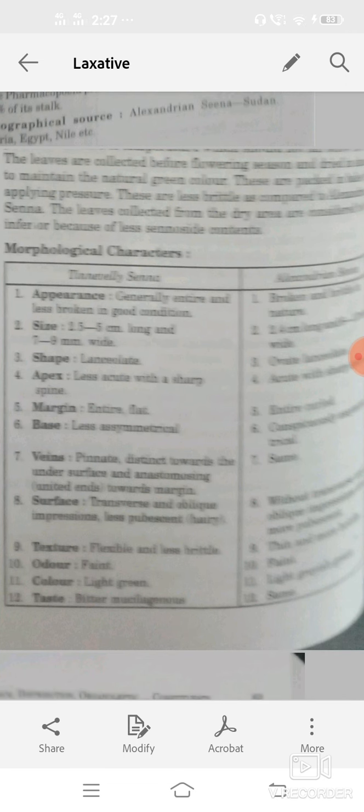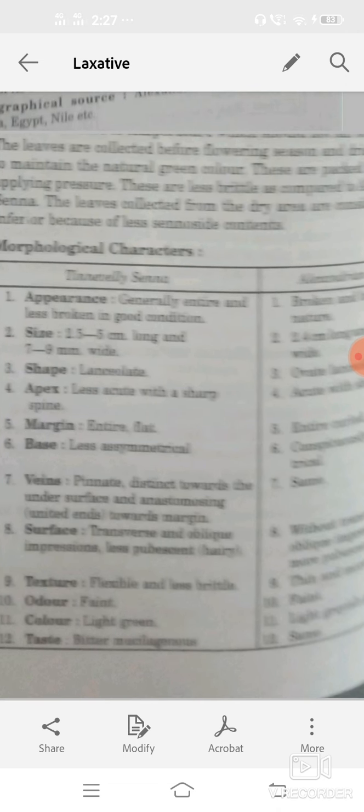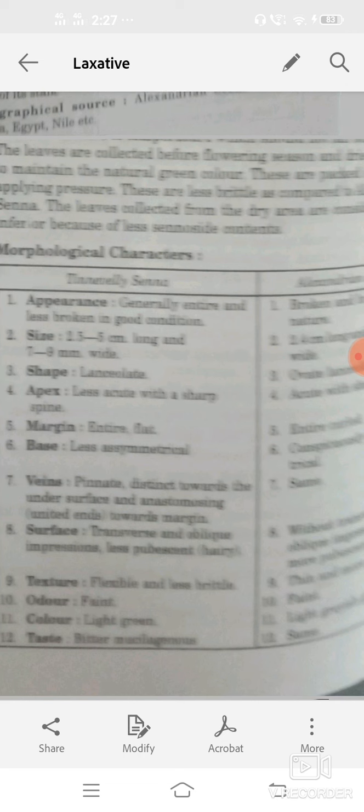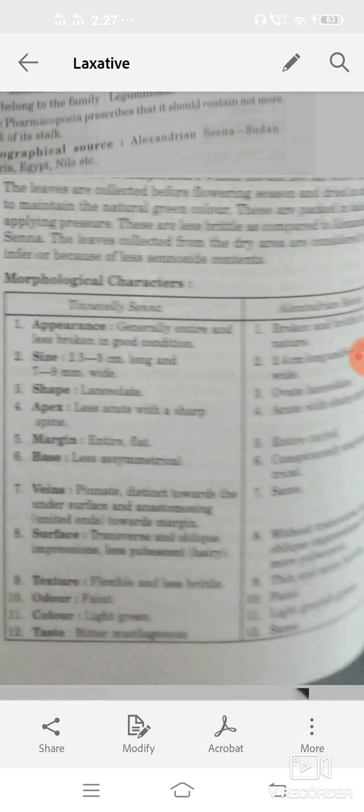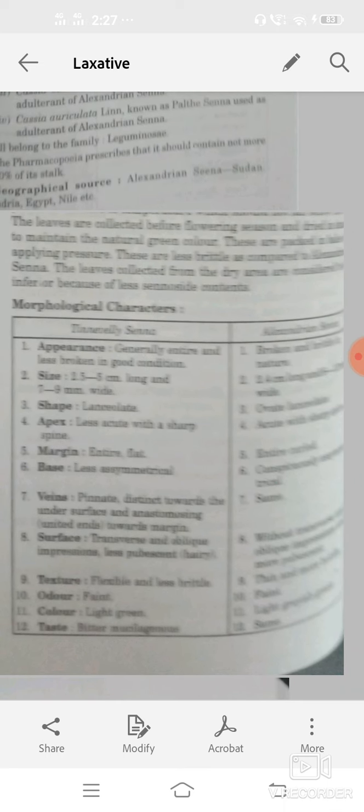Tinnevelly senna's appearance generally entire, less broken, in good condition. Alexandrian broken or brittle in nature. Tinnevelly senna size 2.5 to 5 cm long or 7 to 9 mm width. In Alexandrian senna 2 to 4 cm long, 6 to 12 mm width. Shape: lanceolate. But in Alexandrian, obviate shape. Apex less acute with sharp spine, margin entire or flat. In Alexandrian entire.